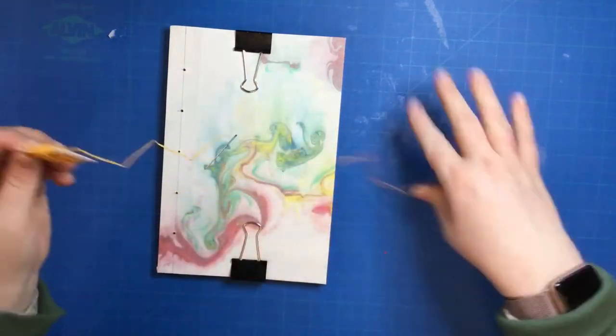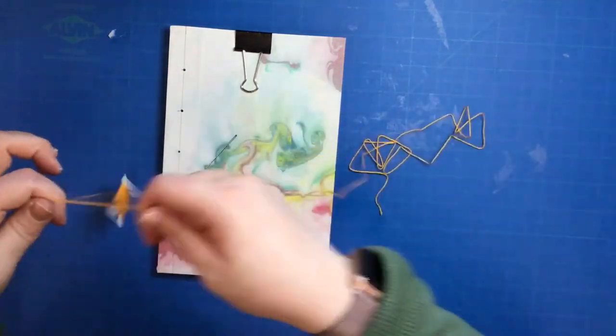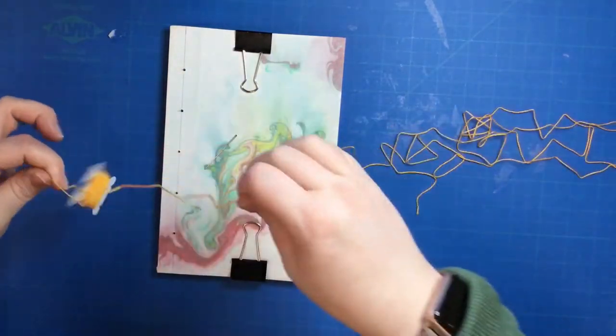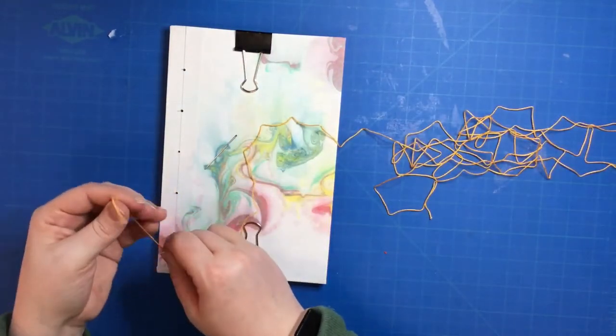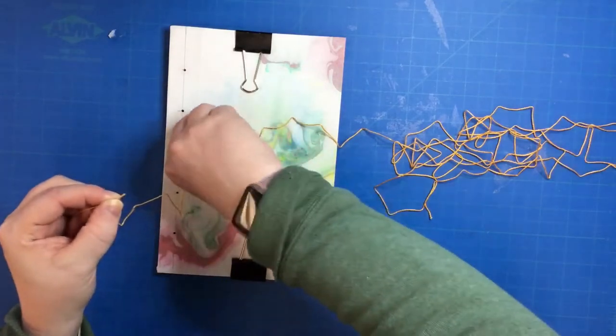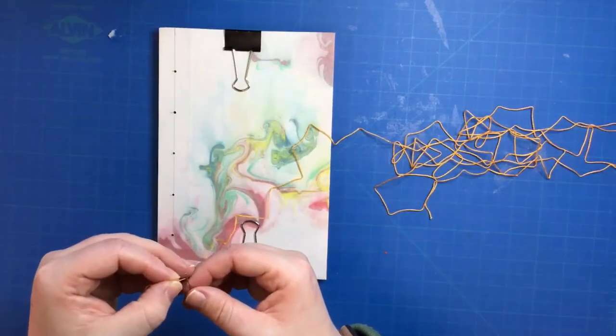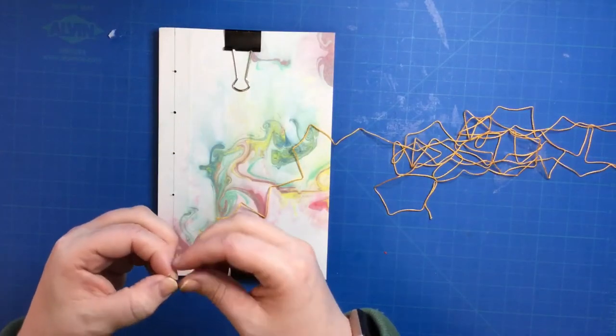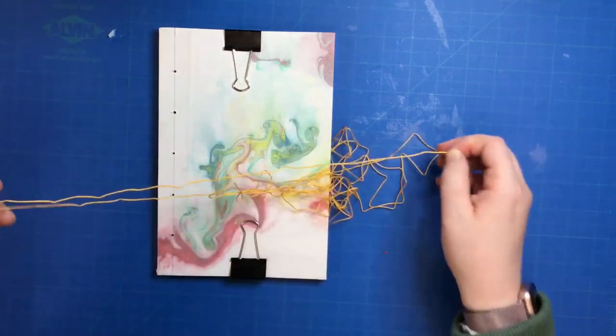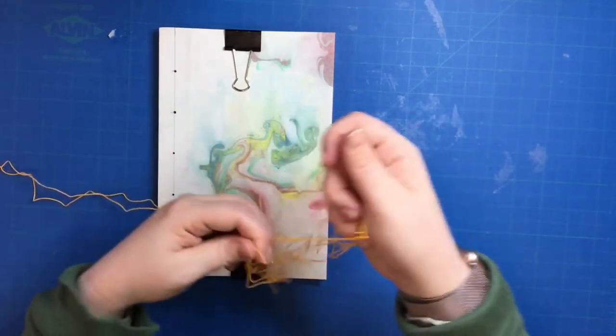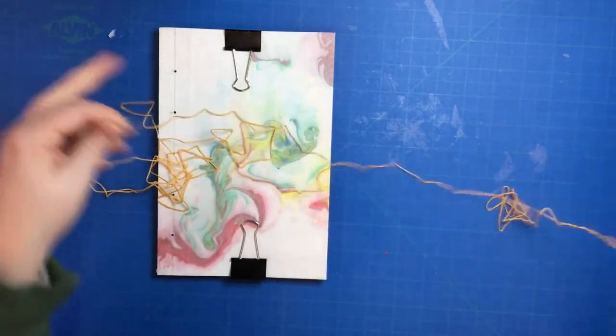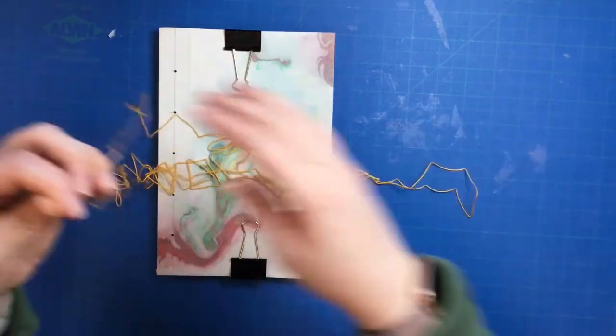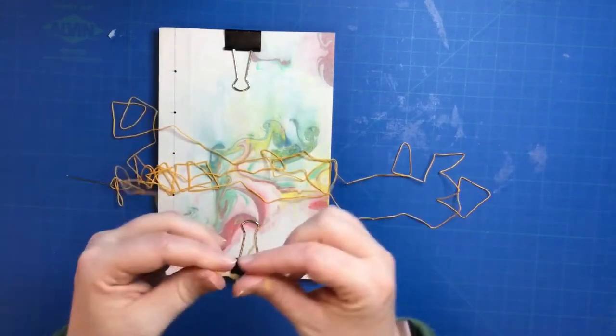Get the string color of your choice and get a fair amount of string. For this book binding, it's difficult to add string during the process, so it's better to have more string than to add some later. Thread the needle and pull it through until it evenly meets the other side of the string. That way you'll have a knot on one end and your needle on the other.